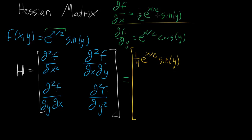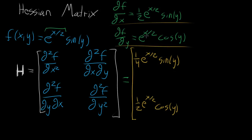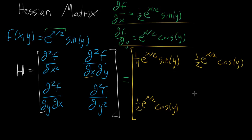For the mixed partial — first with respect to x, then y — the one half e to the x halves looks like a constant, and the derivative of sine of y becomes cosine of y, giving one half e to the x halves times cosine of y. Then the other mixed partial, doing it first with respect to y then x: differentiating e to the x halves times cosine of y with respect to x brings down the half, giving one half e to the x halves times cosine of y. It shouldn't be a surprise that both mixed partials are the same — for most functions that's the case, though technically not all functions will give a symmetric Hessian.